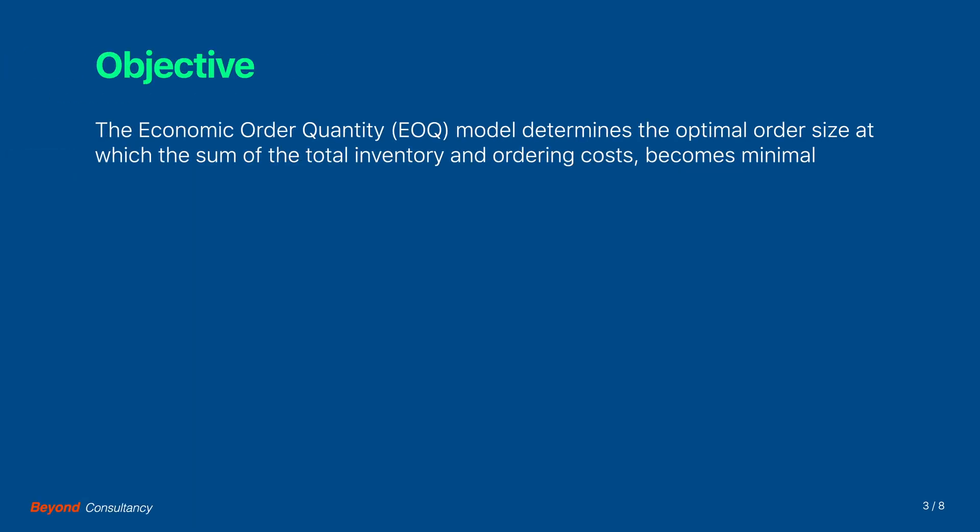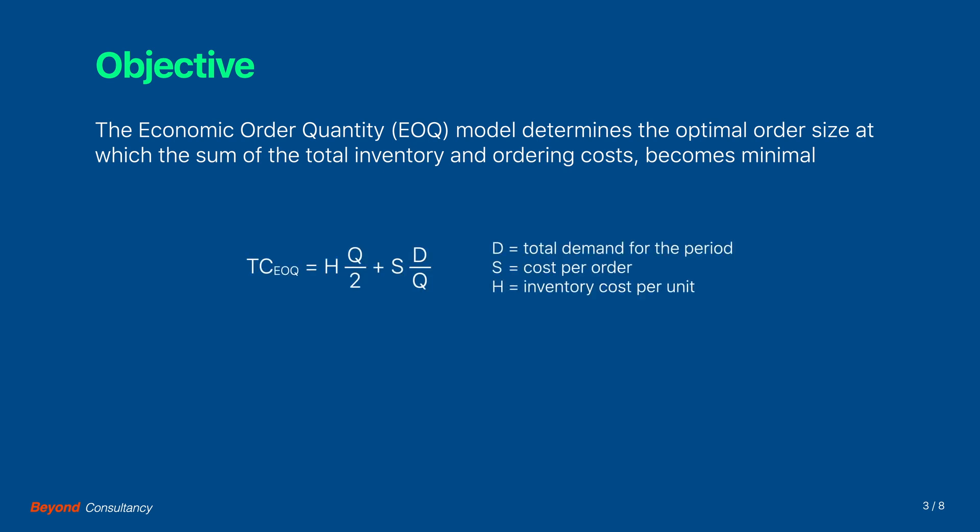The economic order quantity determines the optimal order size at which the sum of the total inventory and ordering costs become minimal. This sum can be expressed as follows, where D is the total demand for the period, S is the cost of making an order, and H is the inventory cost per unit. The optimal order size is determined through the following formula.